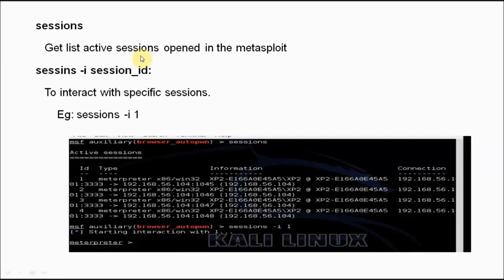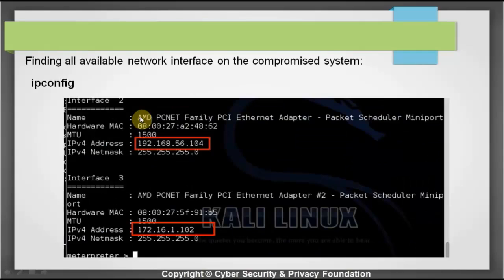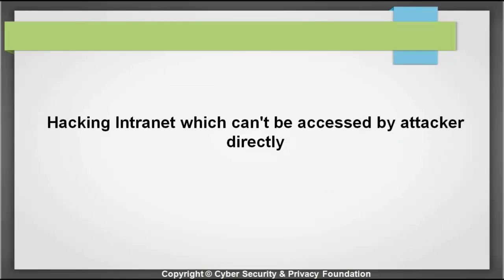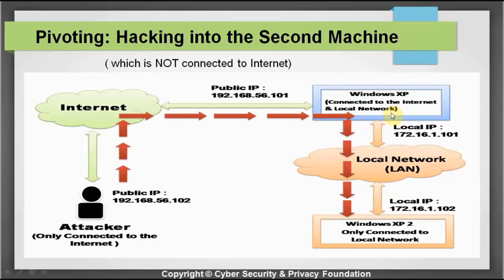You can get the list of active sessions by typing sessions in Metasploit. To interact with a specific session, give sessions -i followed by the session ID — for example, sessions -i 1 to open session 1. Once inside the first XP computer, you list all network interfaces. Because it is connected both to the internet and the internal network, it will have two IP addresses: one public internet IP and one LAN IP address.